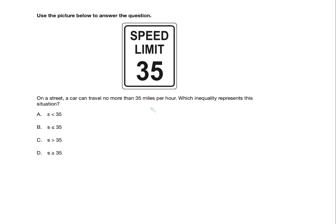Use the picture below to answer the question — Speed Limit 35. On a street, a car can travel no more than 35 miles per hour. Which inequality represents this situation? The keyword here is no more, which means less than or equals. Using variable S, we get S ≤ 35. Notice the context: we're talking about a speed limit, so the maximum you can go is 35 miles per hour or less. The answer is B.